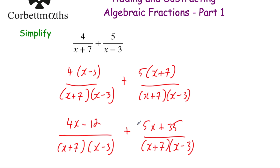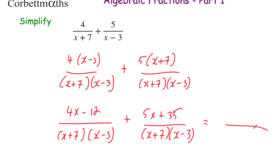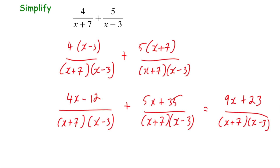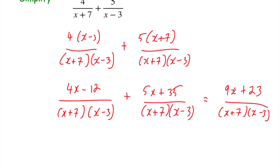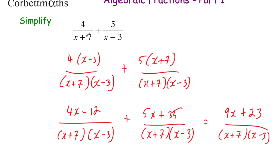We've now got two fractions with the same denominators, so let's add the numerators. For the x terms: 4x + 5x = 9x. For the numbers: −12 + 35 = 23. So the numerator is 9x + 23. I'll check if it factorises — 9x and 23 can't be cancelled down with the denominator. So the final answer for simplifying 4/(x + 7) + 5/(x − 3) is (9x + 23) / [(x + 7)(x − 3)].